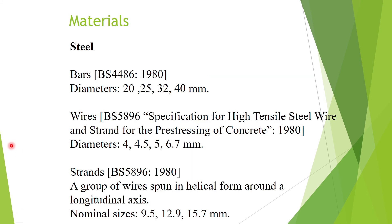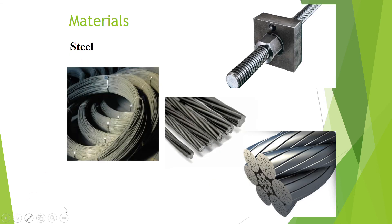For pre-stressing steel, it comes in different forms. The first type is pre-stressing bars, which look similar to normal reinforcing bars but are threaded so that a nut can be used to tighten the anchor blocks and induce tension in the bars.